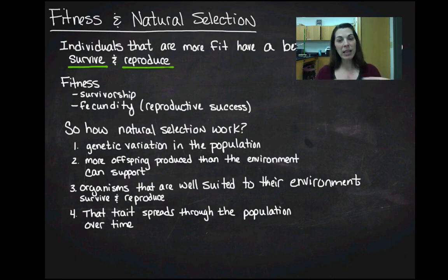If I'm a brown bunny, that is allowing me to survive, and so then I can pass my traits on to the next generation. But the evolution of the population, that natural selection, that's going to happen over time as the traits shift through that population. The genes have to spread throughout.